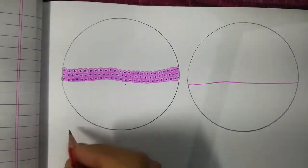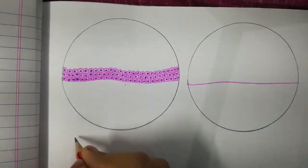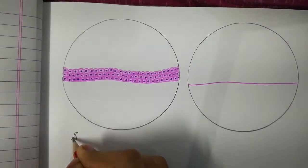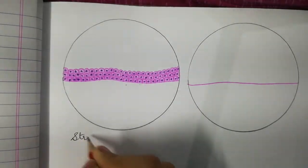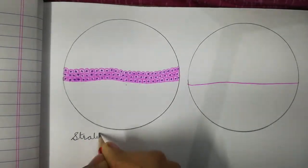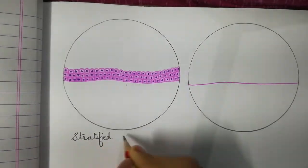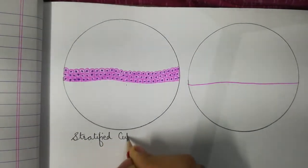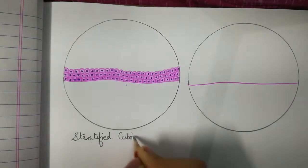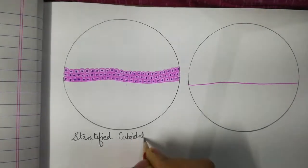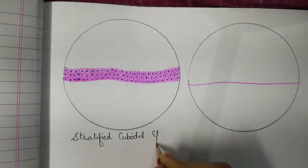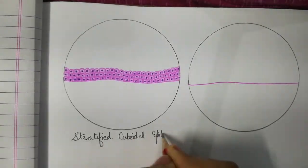We will label this epithelium as stratified cuboidal epithelium.